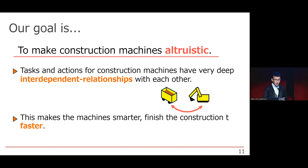So our goal in this study is to make a construction machine think of altruism. This is because tasks and actions from construction machines have very deep interdependent relationships with each other, and will make them smarter, finish the construction task faster.